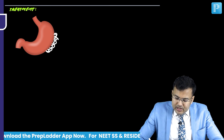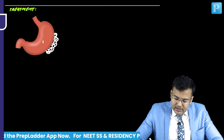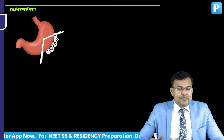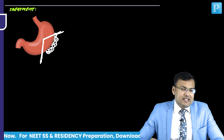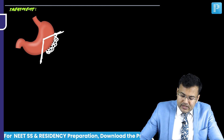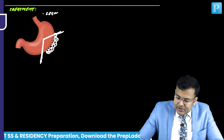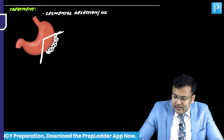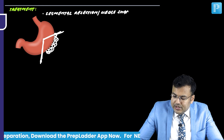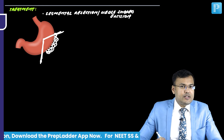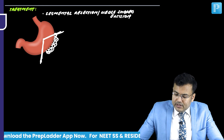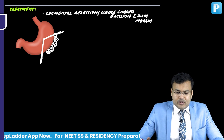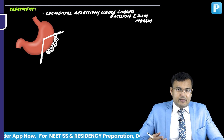For treatment of resectable GIST, we perform wedge-shaped excision or wide local excision (segmental resection) with a 2 centimeter margin. No lymphadenectomy is needed because there is no lymphatic spread.